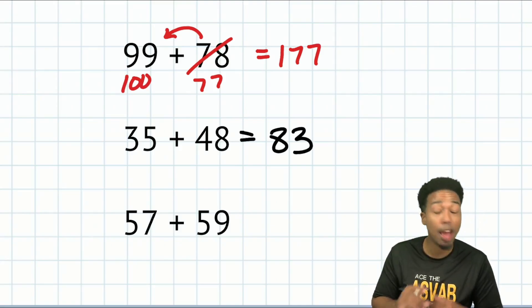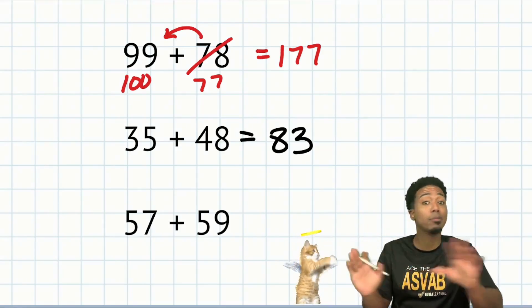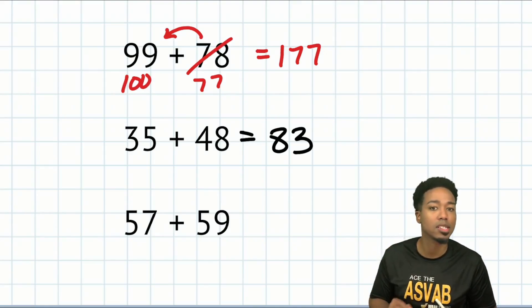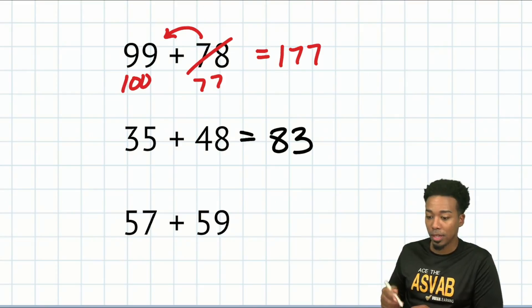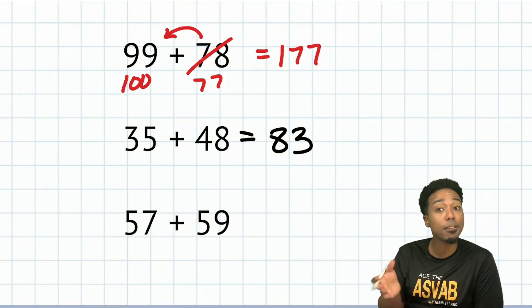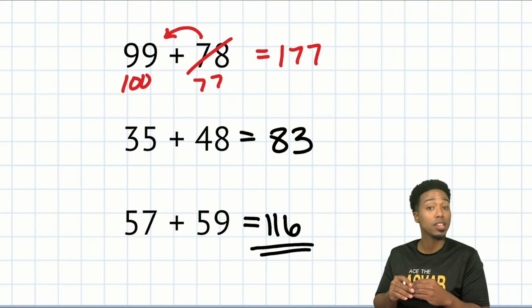Again, this is absolutely possible for you. I'm not sitting here trying to be some messiah of math. No, this is absolutely possible for anybody out there who's willing to put in a little bit of consistent time to get to where they need to be. So lastly, over here, we have 57 plus 59. 50 and 50 is 100. 7 and 9 is 16. 116. I am absolutely 100% serious when I say that anybody can do this just like you can.